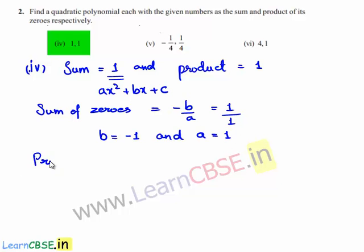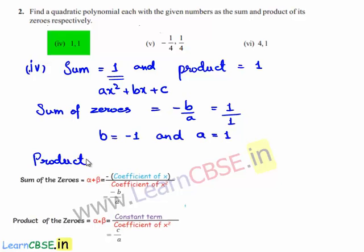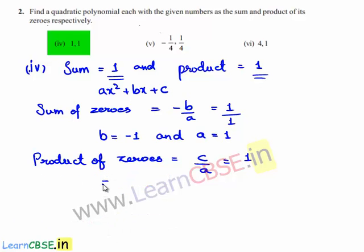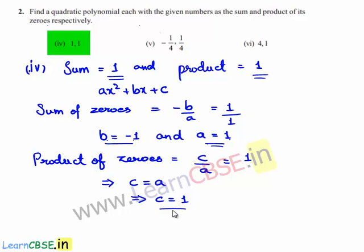We also know that the product of the zeros is equal to C by A. The given product to us is 1, so by cross multiplication, C is equal to A. We also found the value of A to be 1. Therefore, C is equal to 1. Finally, A is 1, B is equal to minus 1, and C is equal to 1.